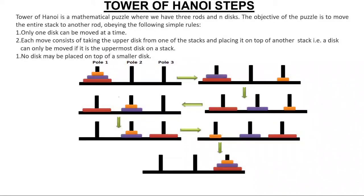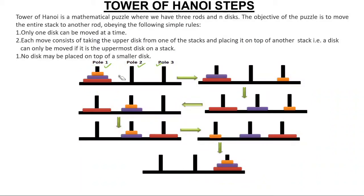We have already discussed the problem: there are three poles — pole number one, pole number two, and pole number three. Some disks are arranged in decreasing order, with the smaller one at the top and the biggest one at the bottom. You have to move the same arrangement from pole one to pole three, using pole two as a helper.